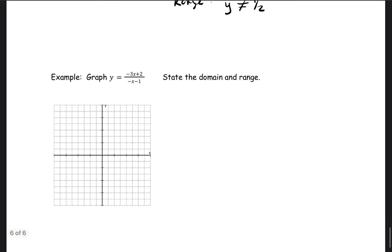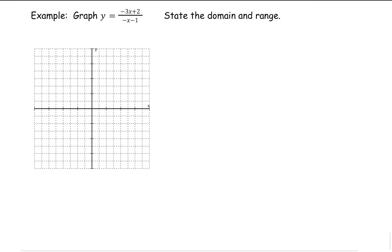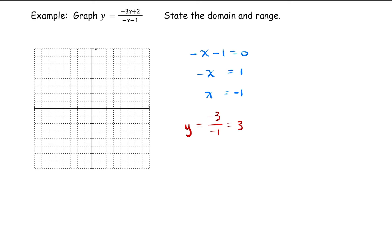Let's do one last example and then we'll call it good for today. We're going to find our x and y asymptotes. Taking the denominator, negative x minus 1, and setting it equal to 0: we get negative x equals 1, so x must equal negative 1. Then we take the leading coefficients — y equals negative 3 over negative 1, which is just positive 3. So our two asymptotes are at x equals negative 1 and y equals 3. We'll drop those in on the graph.